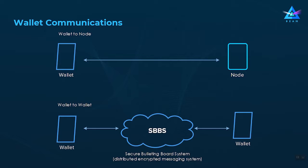If we take a look at wallet communications, the wallet communicates with the node to get all information about the blockchain. There is also wallet-to-wallet communication done using SBBS, which stands for Secure Bulletin Board System. SBBS is basically a distributed encrypted messaging system that allows two wallets to exchange encrypted messages and thus participate in the creation of a transaction.